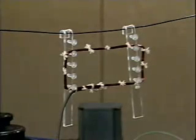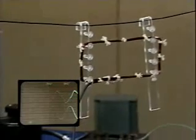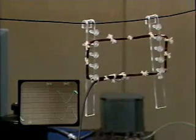The upper trace of this oscilloscope records the electromotive force or voltage at the coil terminals. The lower trace is the current in the wire, measured by the voltage drop across a 1 ohm series resistor.